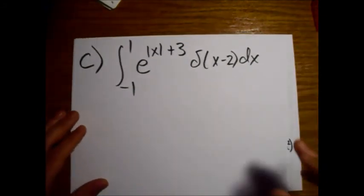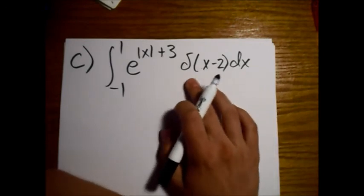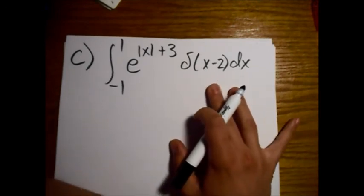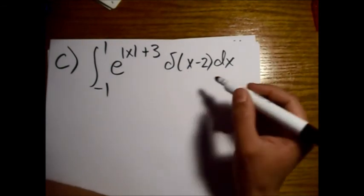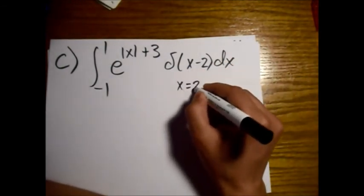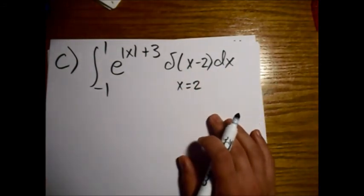Okay, so the first thing we do, we find out where this delta function is non-zero, and that's the only point that's going to count. And this happens at x equals 2. 2 minus 2 equals 0, so the Dirac delta function goes to infinity at that point.